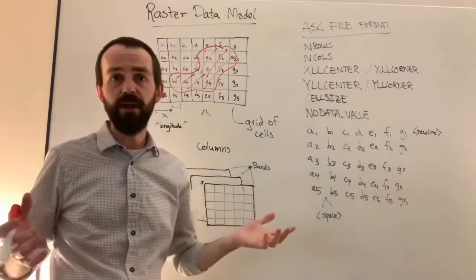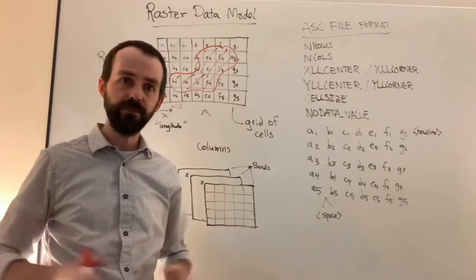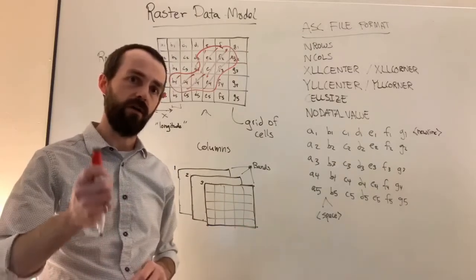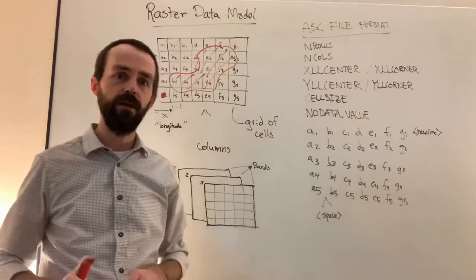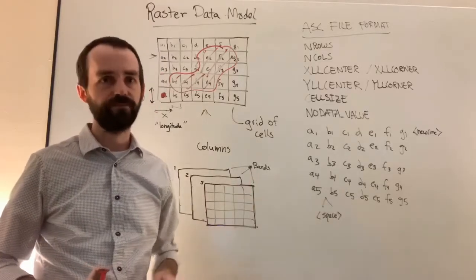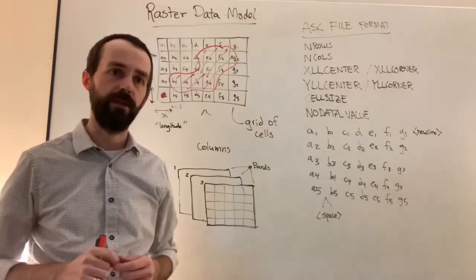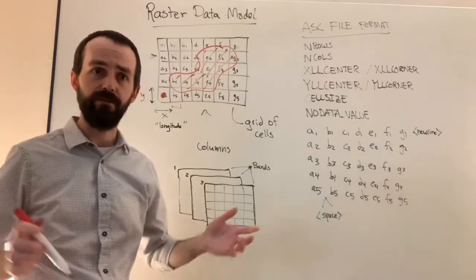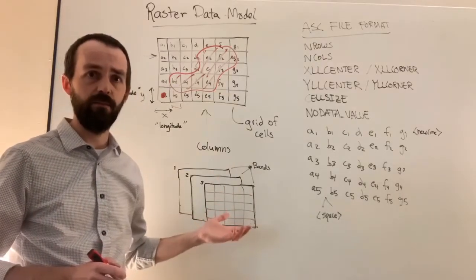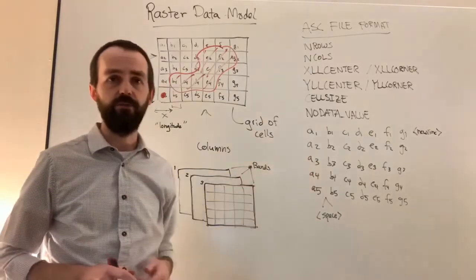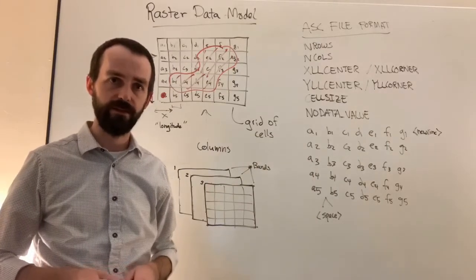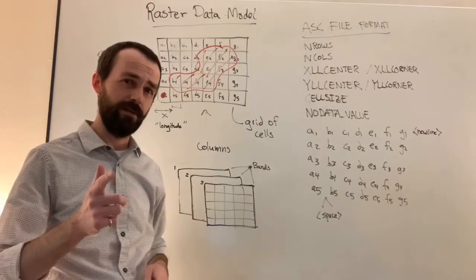All right, but you can play around with the values however you want, submit them into our repository on GitHub, tag the issue, and we'll take a look at them next week. All right, this is the raster data model and the ACI raster file format. I will see you next time.